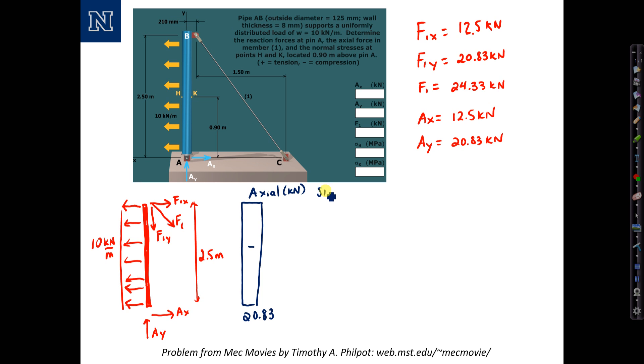Next, the shear force diagram. Shear is also in kilonewtons and I'm going to start at the bottom and work to the top. With A sub x pointing to the right, the shear is going to jump to the right, a value of 12.5 kilonewtons. Then with the distributed load acting to the left, the shear is going to decrease.